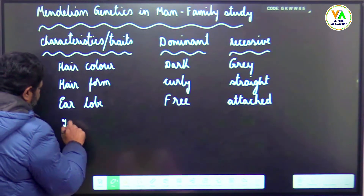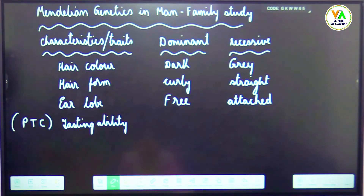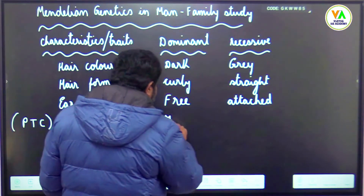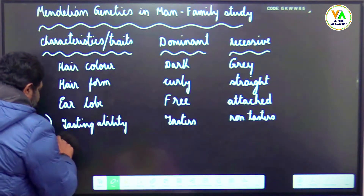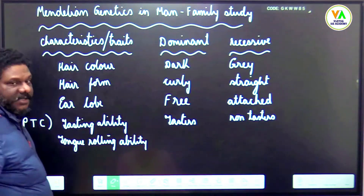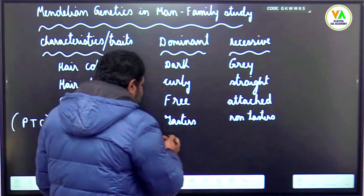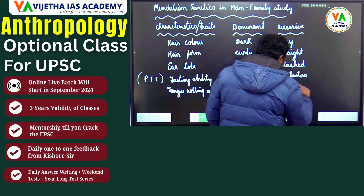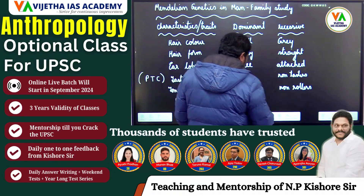Then tasting ability — the ability to taste a bitter substance known as PTC (Phenylthiocarbamide). Not everyone can taste this bitter substance; for some it will taste bland. Those who can taste it are known as tasters and those who cannot are known as non-tasters. Likewise, tongue rolling ability: joining the lateral sides of the tongue is tongue rolling. Those who can roll are rollers; those who cannot are non-rollers. Short fingers are found to be dominant over normal fingers.